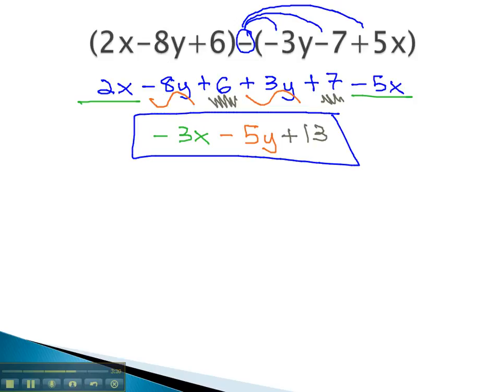Again, when subtracting polynomials, it's a two-step process. First, distribute the negative, taking the opposite of the next polynomial. And finally, combine like terms to get our final solution.